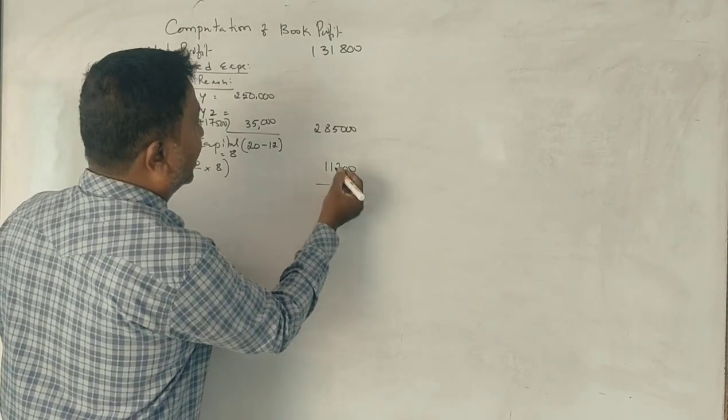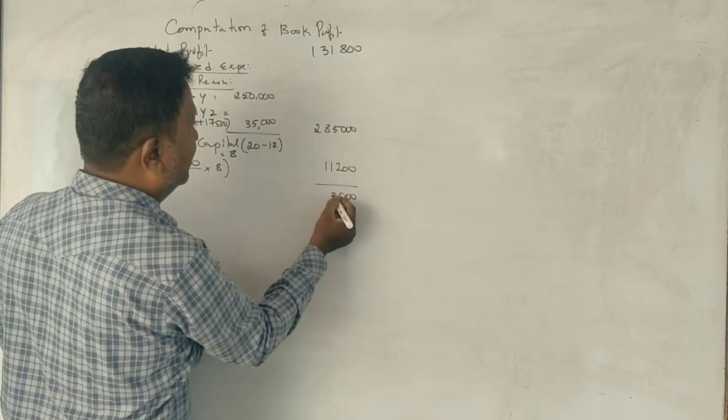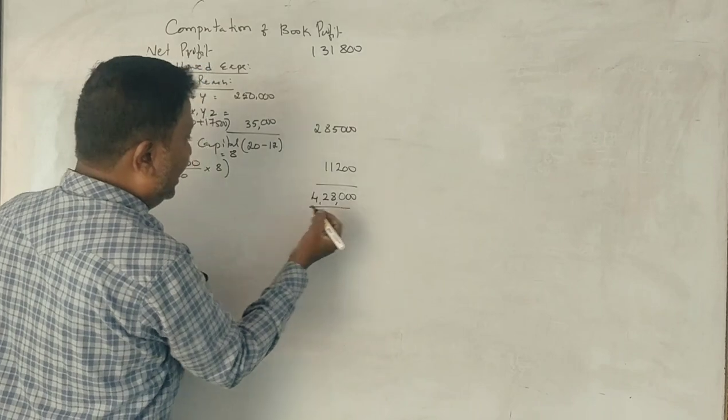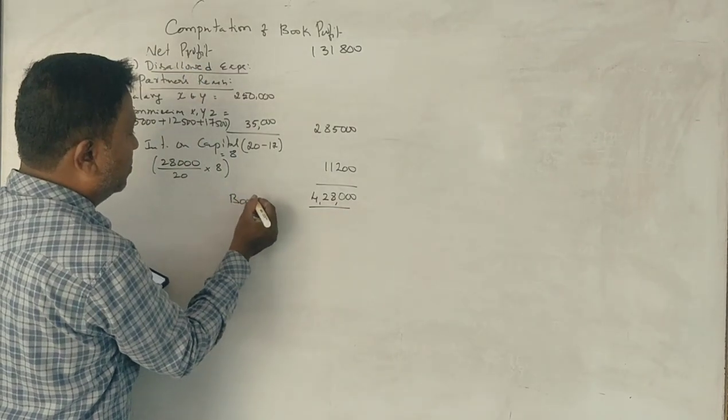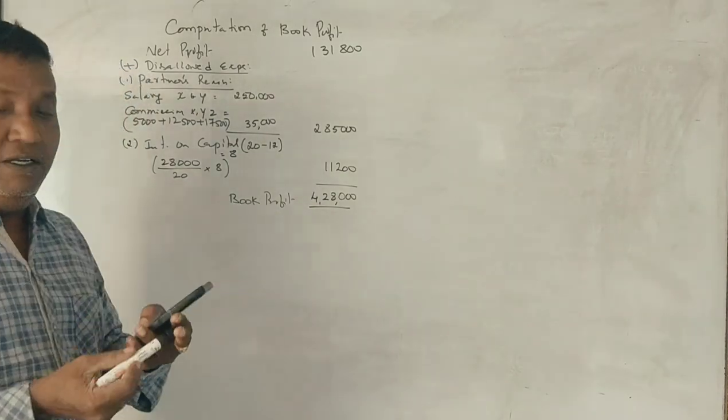Total, the book profit is Rs. 4,28,000. So this is how the book profit is calculated.